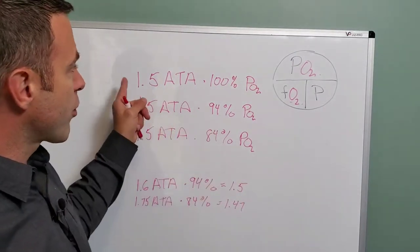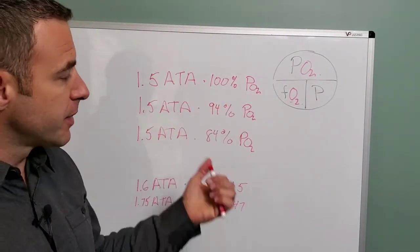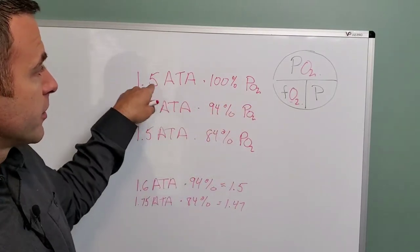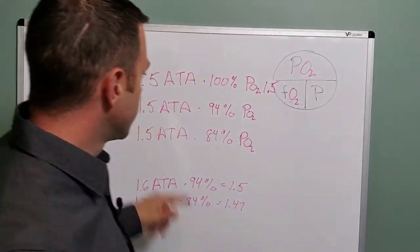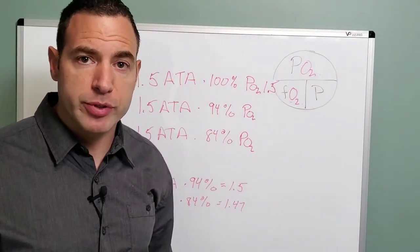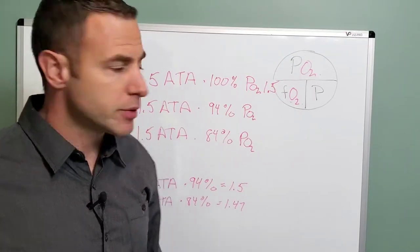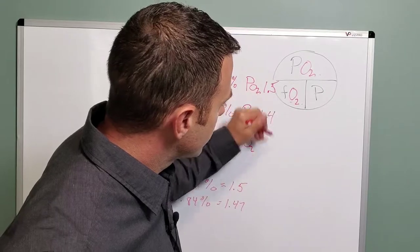And so in the example we had before, one and a half atmospheres at 100% oxygen had a PO2 of 1.5 times 1, which equals 1.5. One and a half atmospheres using an oxygen concentrator, which is about 94% oxygen, is going to have a PO2 of 1.4.